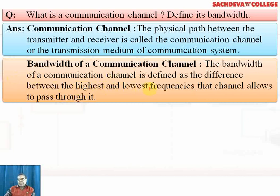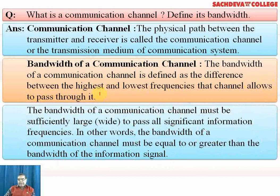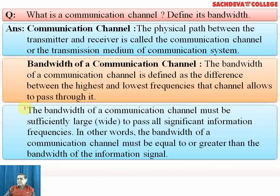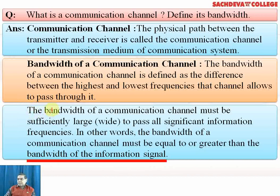If the highest frequency is FH and the lowest is FL, the difference of the two gives the bandwidth of that channel. The bandwidth must be sufficiently large to pass all significant information, since all significant information exists in the form of various frequencies. In other words, the bandwidth of a communication channel must be equal to or greater than the bandwidth of the information signal.